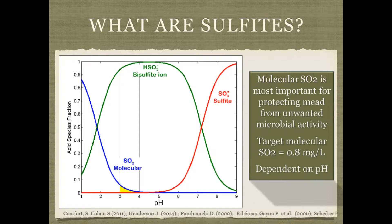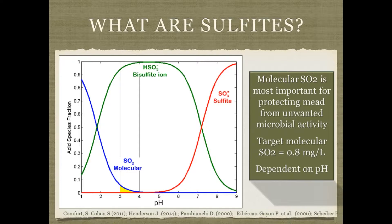Here's a slide showing the activity of these various agents. Since most mead will have a pH of around 3.2 to 3.8, we focus on molecular SO₂. In general, we want a target molecular SO₂ of around 0.8 milligrams per liter. This is very pH dependent — at higher pH levels, you can lose most of the molecular SO₂ activity, and we'll talk about how to account for that.